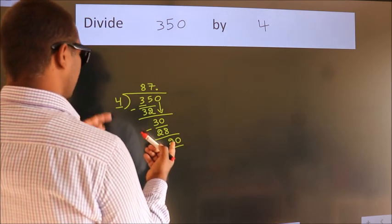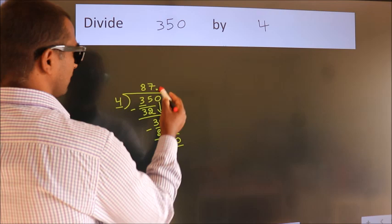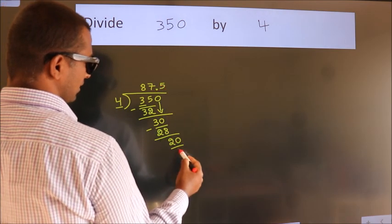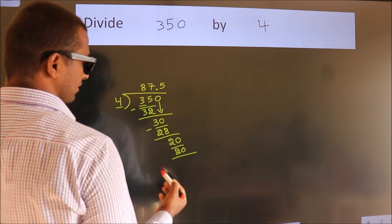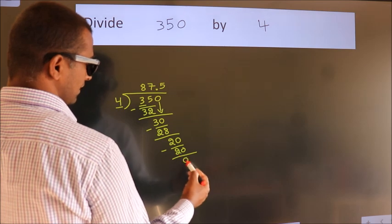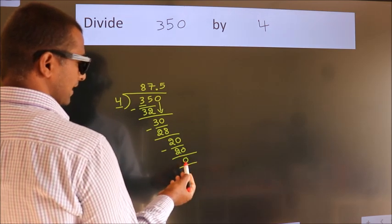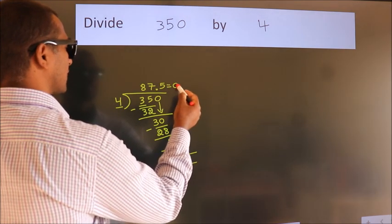When do we get 20? In 4 table. 4 5s, 20. Now we subtract. We get 0. We got remainder 0. So this is our quotient.